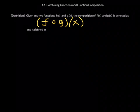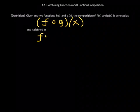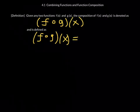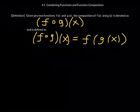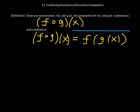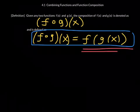Given any two functions, f of x and g of x, the composition of f of x and g of x is denoted as f composed with g at x — that's how you write it — and is defined as: f composed with g at x is f of g of x. You may want to highlight this in your notes. This is really important. This is how you are going to compose two functions. Focus on this side of the equal sign — this is really what it means.